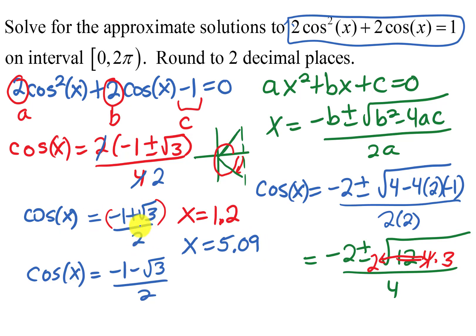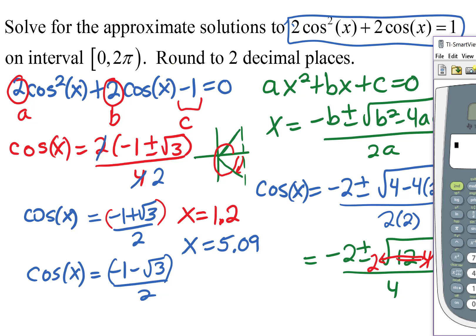Both of those solutions came from the first quadratic formula value. Now for the second value: entering parenthesis, negative 1 minus the square root of 3, close parenthesis, divided by 2, gives negative 1.366 something. That's what cosine x would equal in this case.